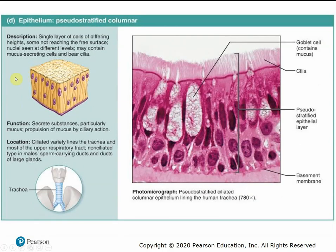Pseudo-stratified columnar epithelium is a single layer of column-shaped cells whose nuclei are at different levels throughout the tissue, so upon first glance it may look like a stratified tissue — but pseudo means fake, so it's a fake stratified columnar. These are typically ciliated, with little hair-like projections on the surface that sweep mucus up and out of the respiratory tract. They are found in the lining of the trachea and most of the upper respiratory tract.